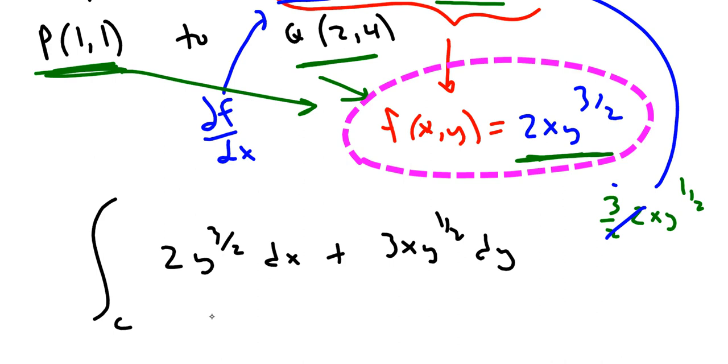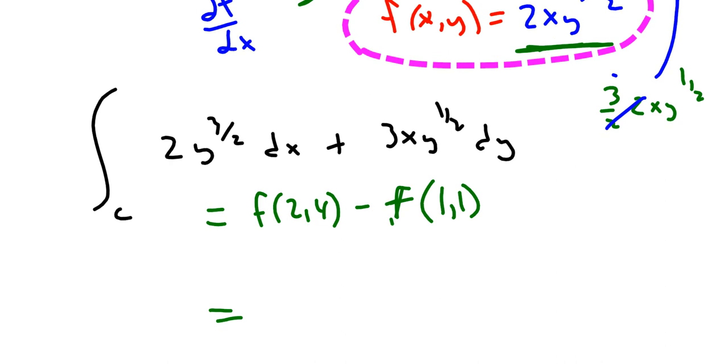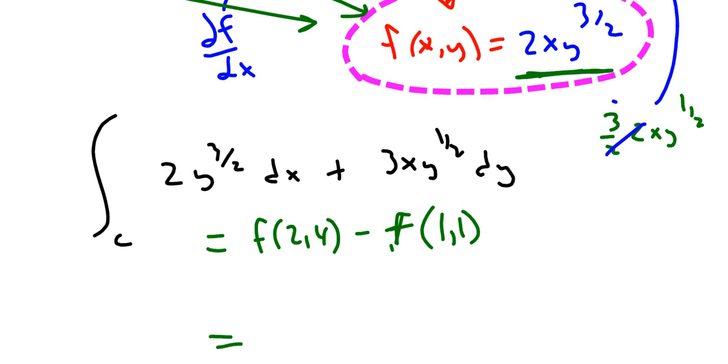So our answer to this integral is simply f of the point (2,4) minus, sorry, f of the point (1,1). A little lag in the pen. Excuse me, we forgot that scalar function is 2xy to the 3/2.